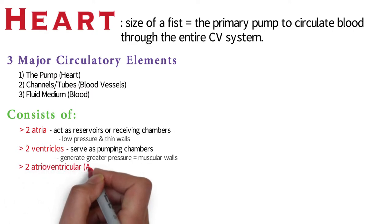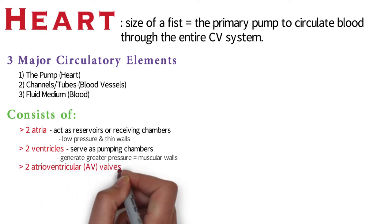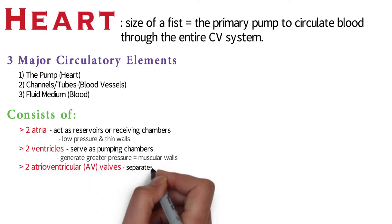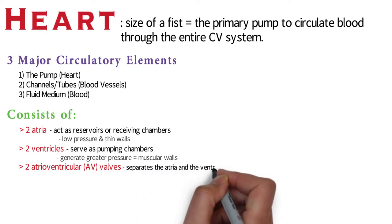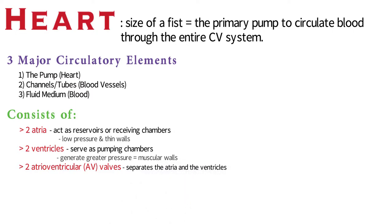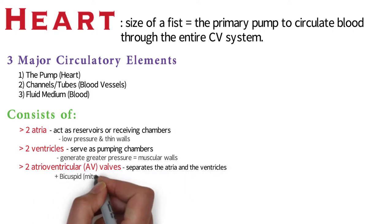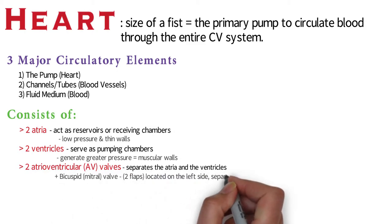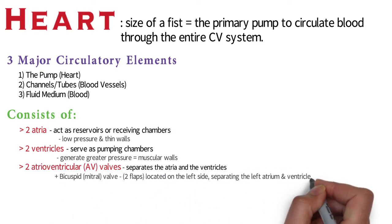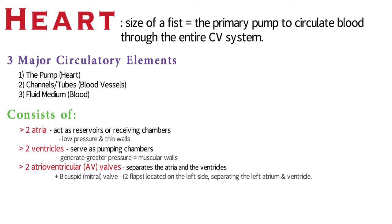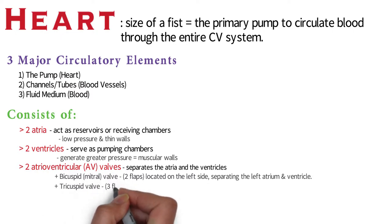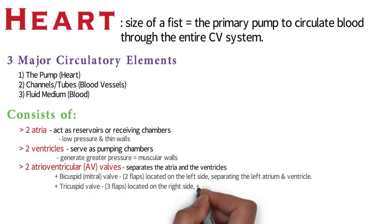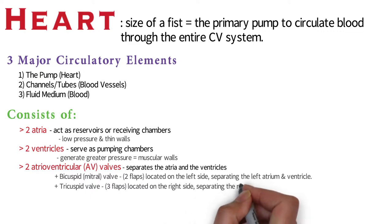Moving on to the valves, there are two atrioventricular or AV valves that separate each atrium from its respective ventricle. The bicuspid or mitral valve, which has two flaps, is located on the left side of the heart, separating the left atrium from the left ventricle. The tricuspid valve, which has three flaps, is located on the right side of the heart, separating the right atrium from the right ventricle.